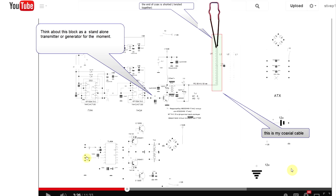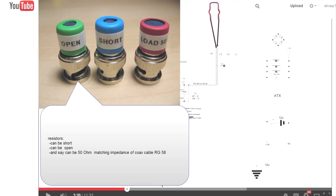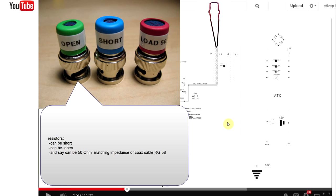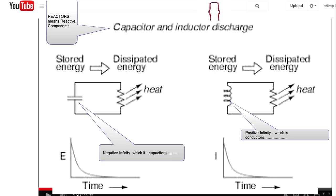Of all the possible resistors you can put on the end, everything from a short circuit — call it zero — to a complete open circuit — call it infinity — you've got a whole continuous range of resistors from short to open. You also have a whole continuous range from negative reactance, which is capacitive, to positive reactance, which is inductive. All of those are possible. Let's just talk about resistors first.